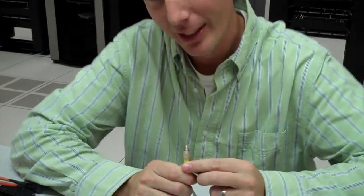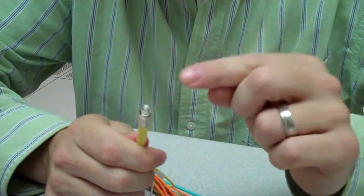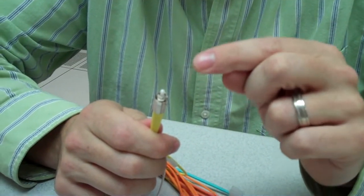This is an FC connector. It's in simplex format and it also has a 2.5 millimeter ferrule. FC stands for ferrule connector, and it was developed by NTT, Nippon Telephone and Telegraph. It has a screw-on connector that's designed for high vibration environments. When installed, it's pull-proof and wiggle-proof.